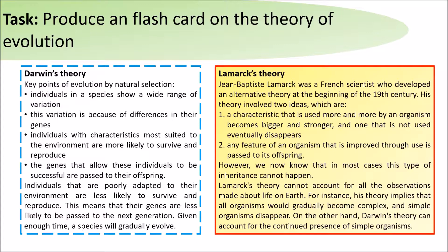For instance, his theory implies that all organisms would gradually become complex and that simple organisms would disappear. On the other hand, Darwin's theory can account for the continued presence of simple organisms.